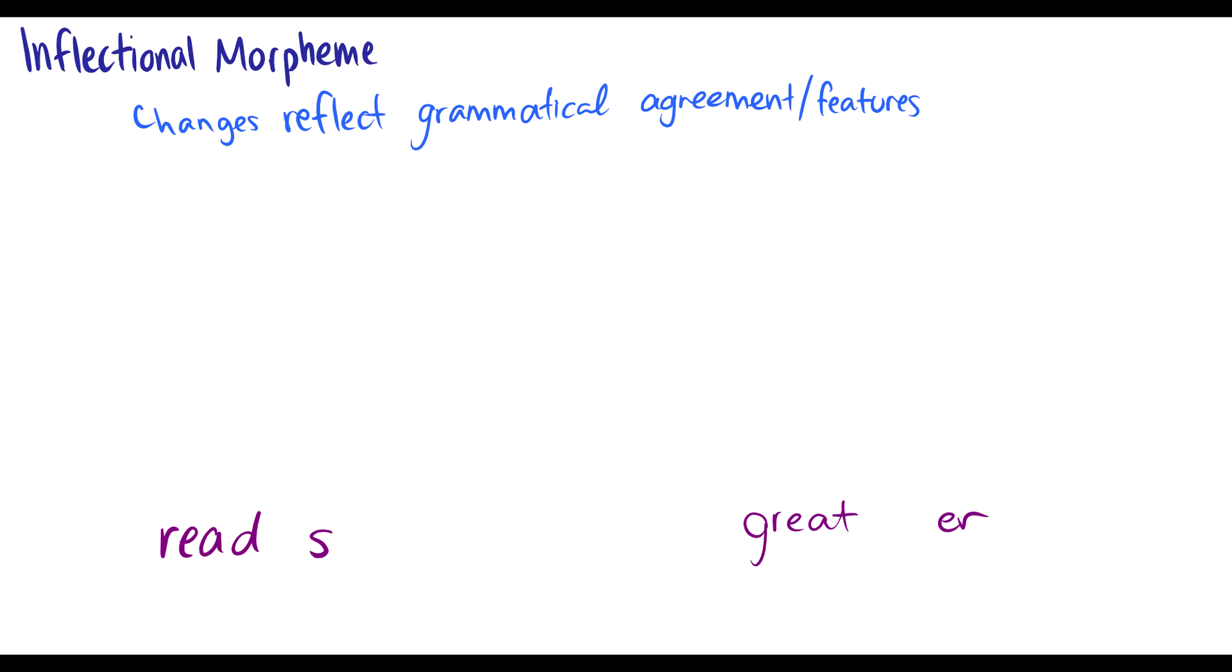These reflect grammatical agreement or features of a language. For instance, reads. Read is a verb, -s is an affix. Together, this forms the verb reads. Now what is this -s actually? This is third person singular. He reads. I read, he reads. So this -s is a grammatical agreement with third person singular.